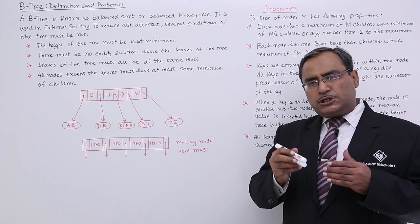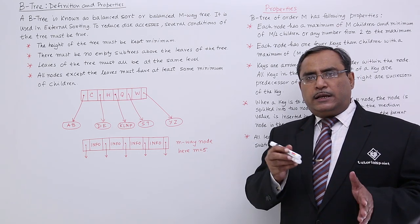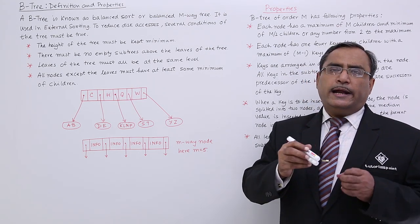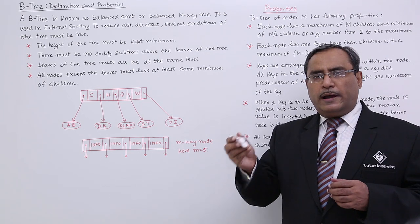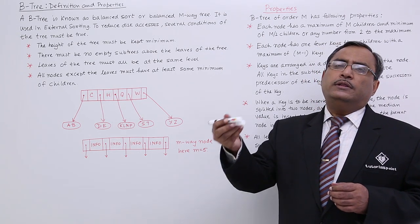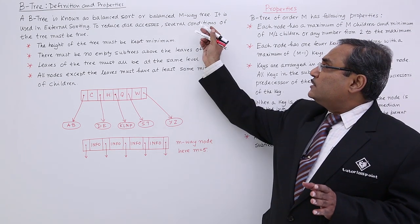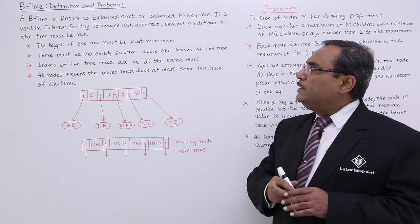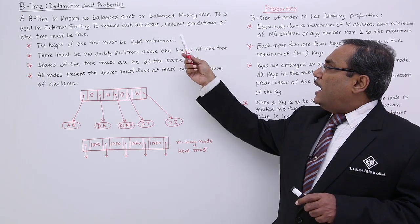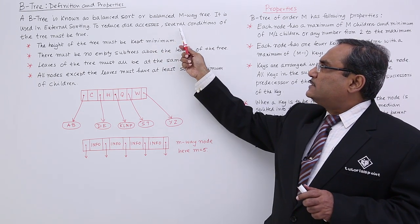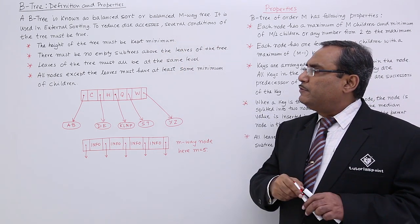What will be done? Using merge sort and partially keeping data onto the main memory, the data items will get sorted. They will be written back onto the secondary store. New data set will be brought and that is known as the external sorting. That external sorting will be using this B-Tree and to reduce disk accesses several conditions of the B-Tree must be true.